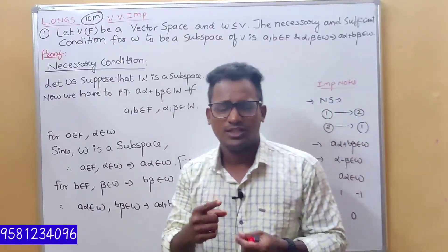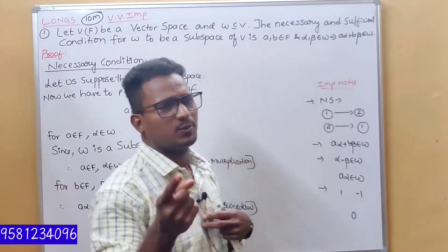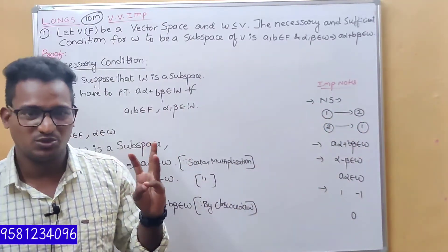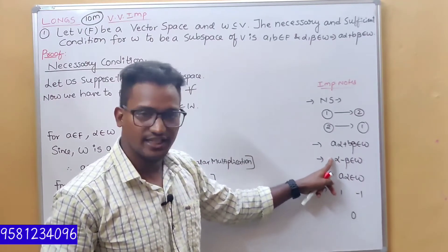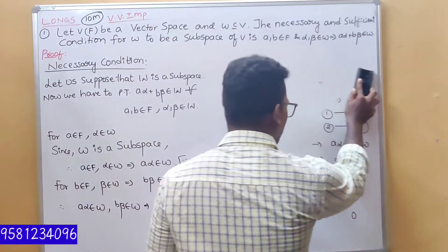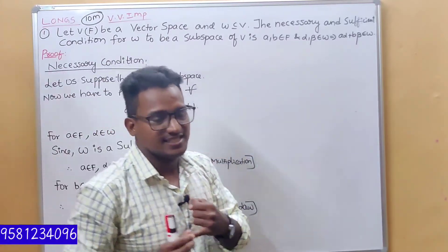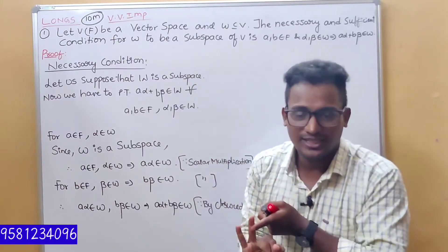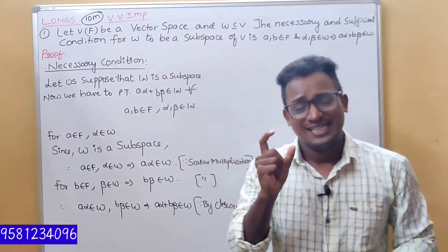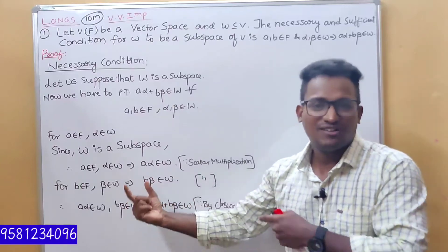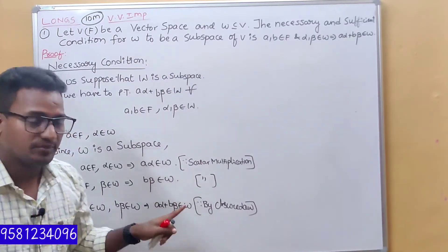Condition is necessary. Let us suppose that W is subspace. Now we have to prove that A·alpha plus B·beta. Beta belongs to W, A and B belong to F, alpha and beta in W. First element: A belongs to F, alpha belongs to W — A·alpha belongs to W by scalar multiplication. B belongs to F, beta belongs to W — B·beta belongs to W by scalar multiplication.